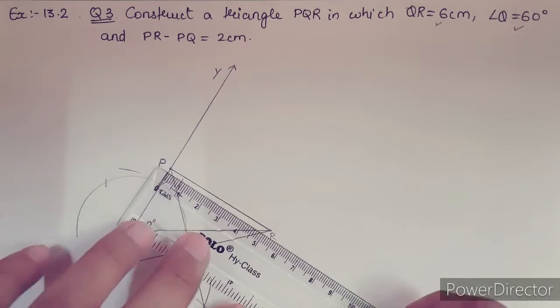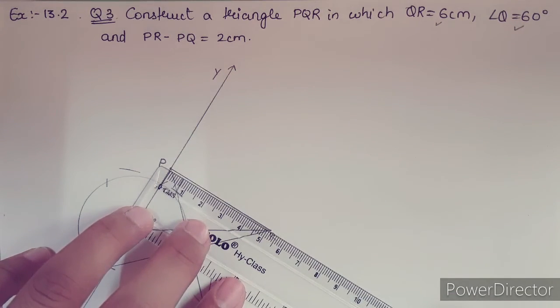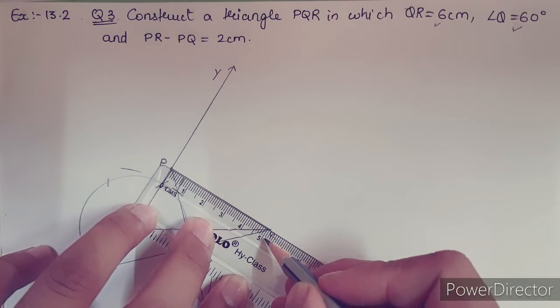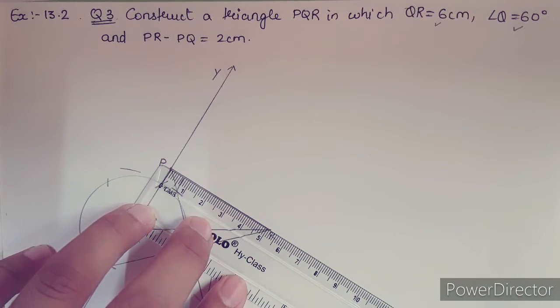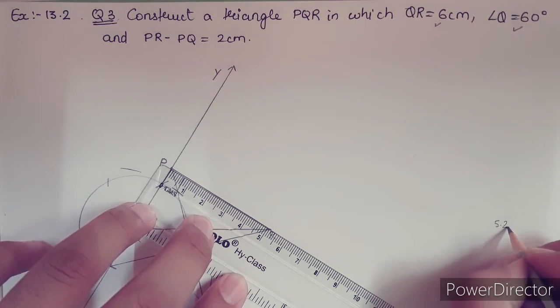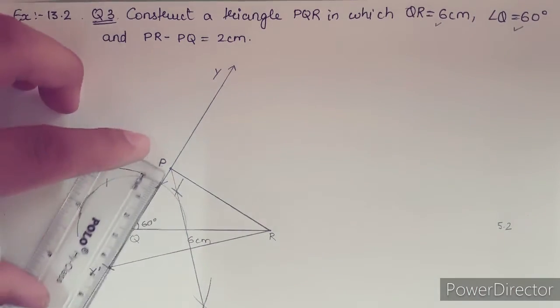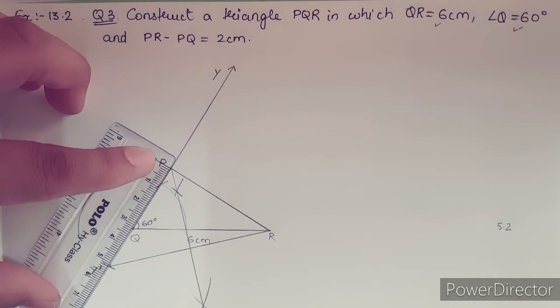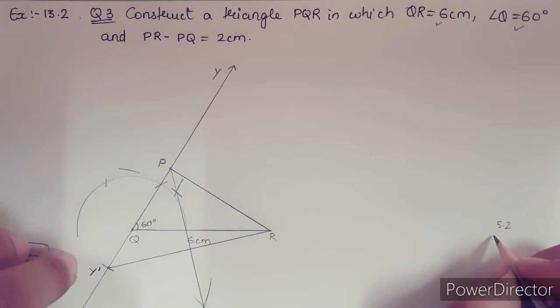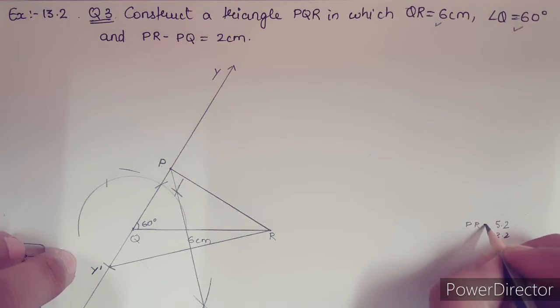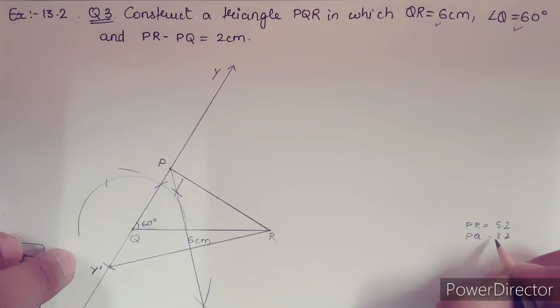Let's take the measurement of PR. PR is coming somewhere as 5.2, and PQ is coming as 3.2.